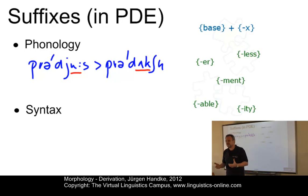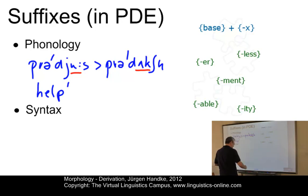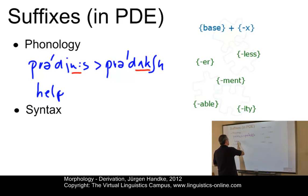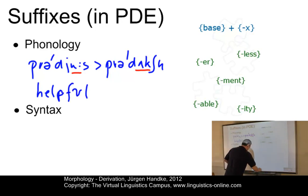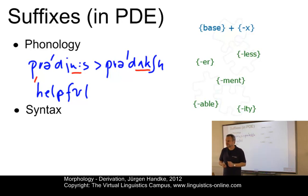On the other hand, we have suffixes that are phonologically neutral. Examples would be something like 'helpful' — here we have the stress on the first syllable in both 'help' and 'helpful,' so there is no change. Other examples would be something like 'punish' and 'punishment,' where nothing happens to the base form in terms of any phonological change.